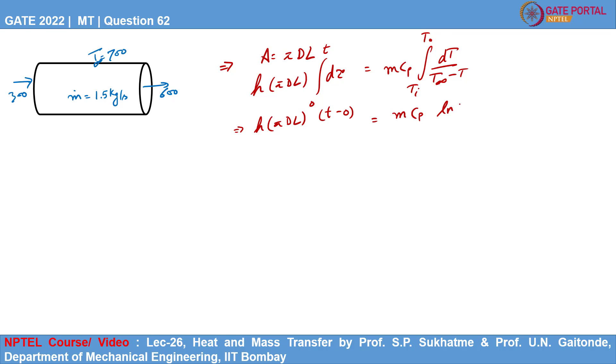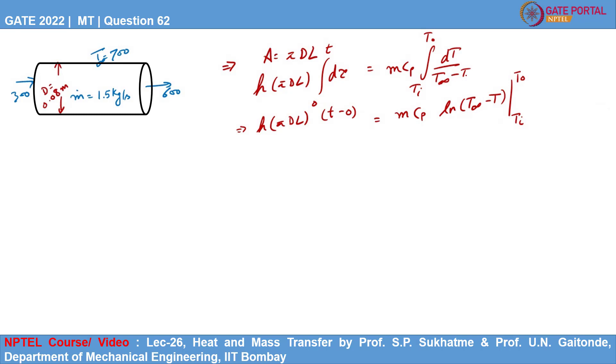What is the integration of t, t wall minus t? It will be natural log of t ambient minus t with the limits of t i to t 0. Since here it is t wall minus t, so since there is negative t, so its integration will have a negative sign also. Now, putting the limits, we will get h pi d L time t. We can take time on the other side. Now, mass upon time represents the mass flow rate. Since we are required to find the length of the tube, so we can keep length on the left hand side and all other variables on the right hand side.